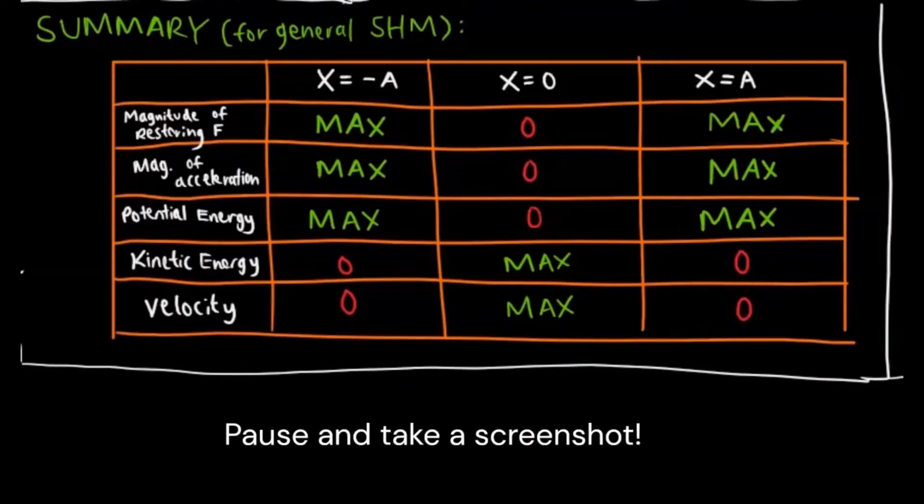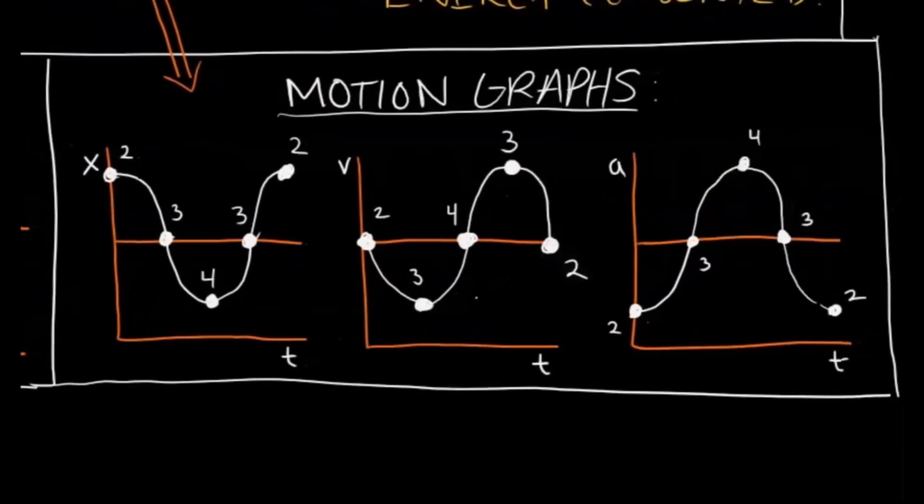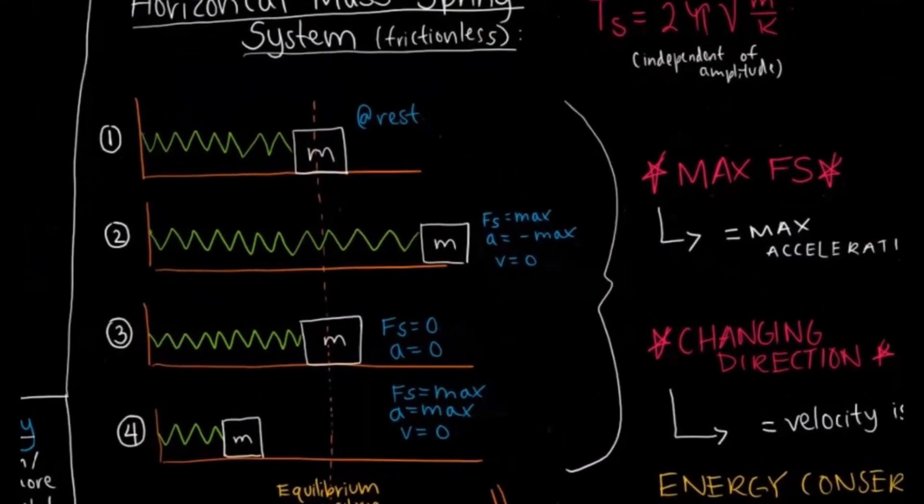So here is a table summary of just general simple harmonic motions, and on this side we have some motion graphs. These motion graphs are just a way to represent motion, and we can see that it's representative of this spring mass system that is oscillating.